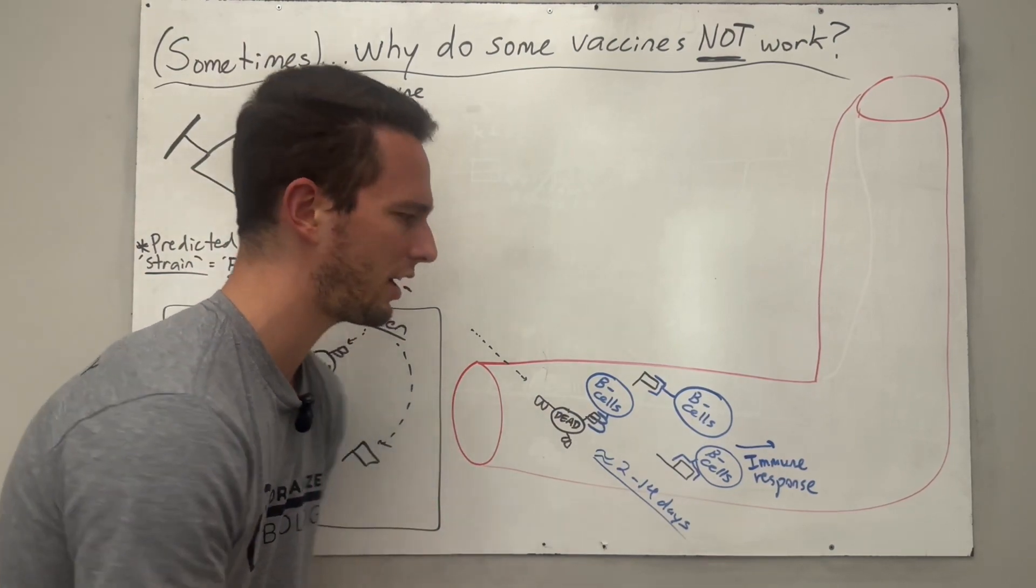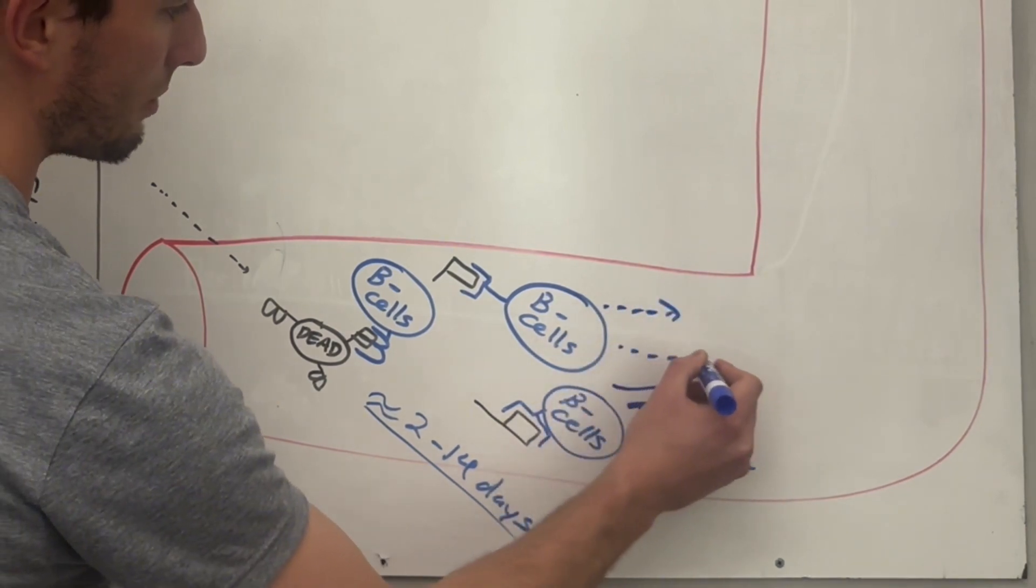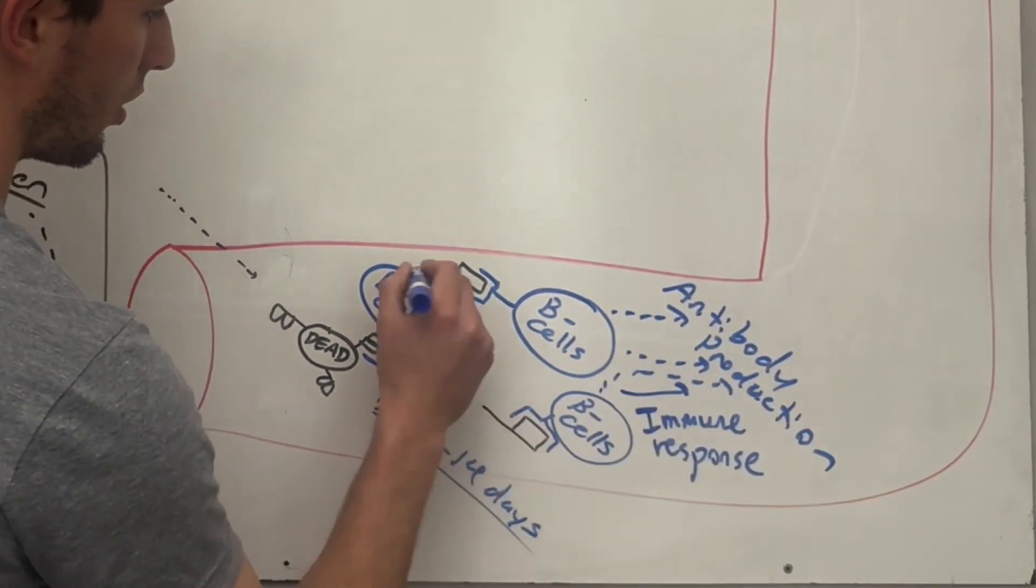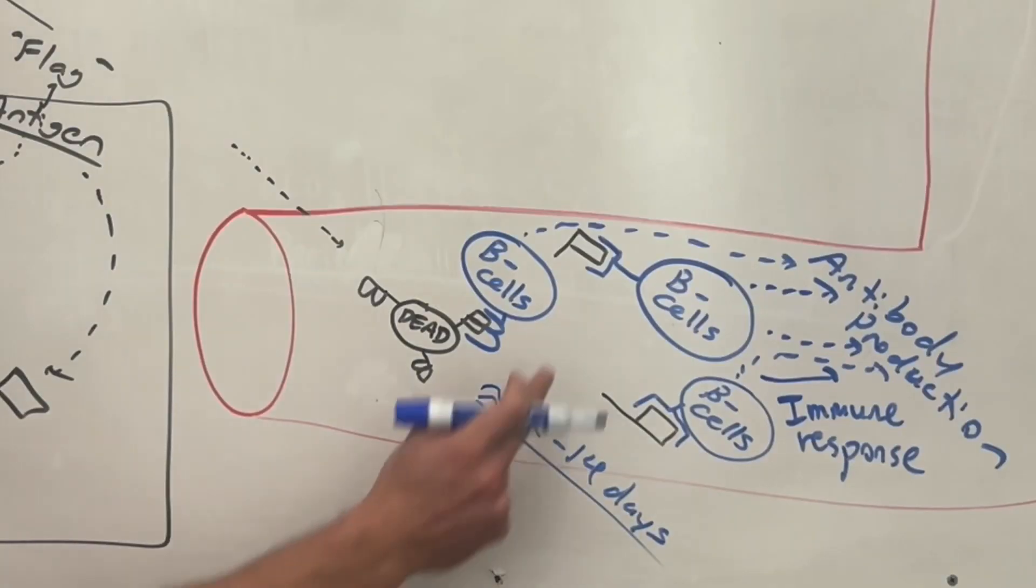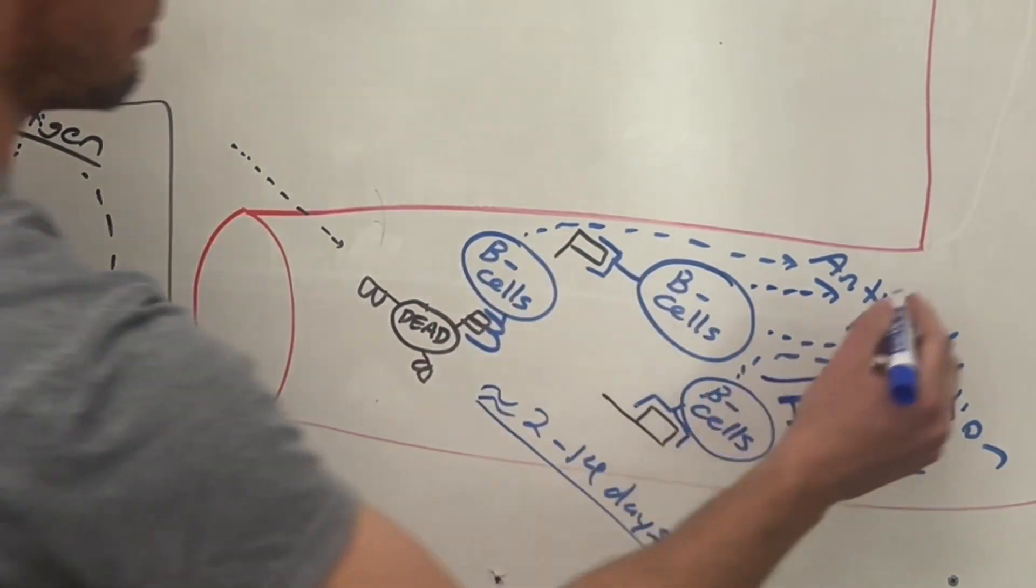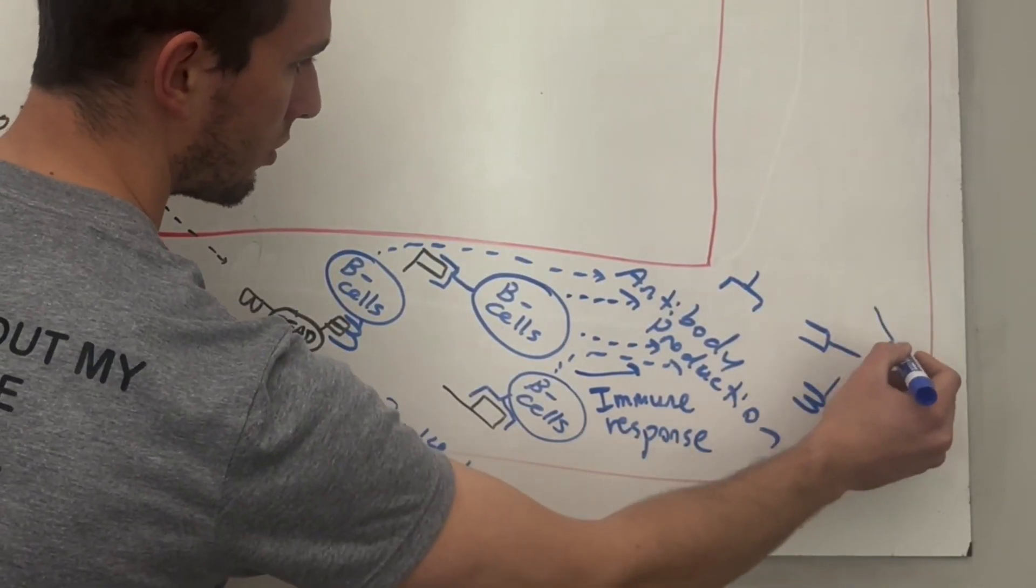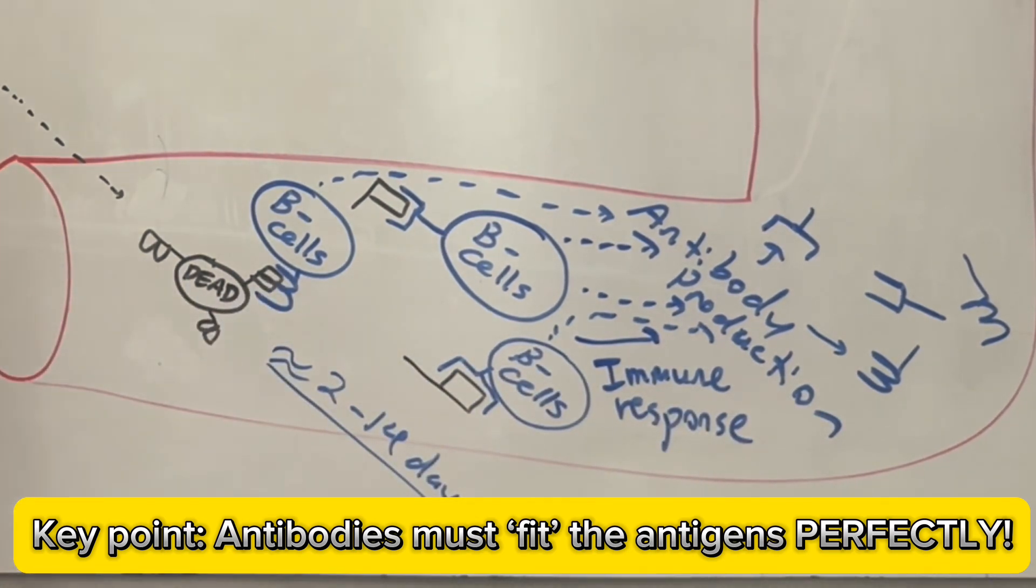Now what do I mean by potentially fight off? Well, once this occurs the B cells are going to begin producing things called antibodies. And what antibodies are, are these free floating proteins that these B cells make that will look incredibly similar to the receptor complexes that we had here. So let me draw them. And as you can see, these antibodies will fit perfectly into those potential antigens.